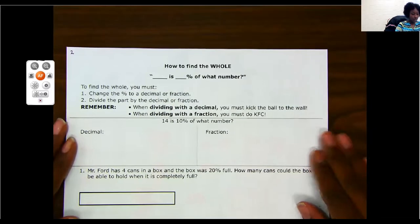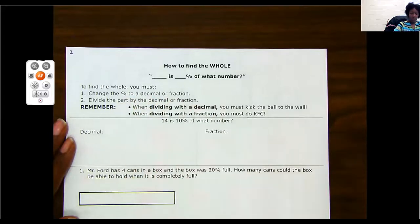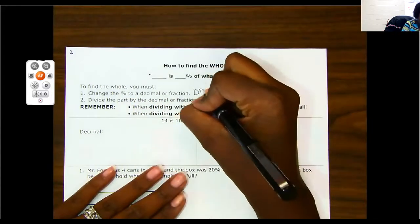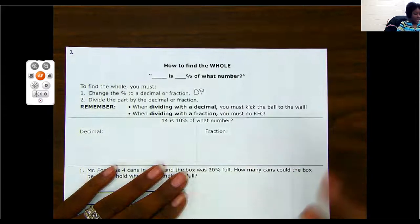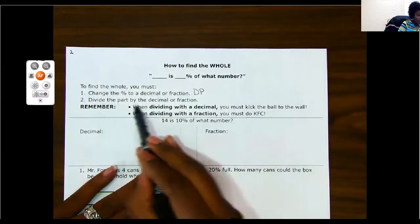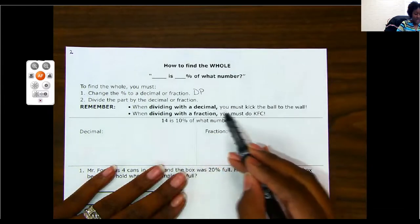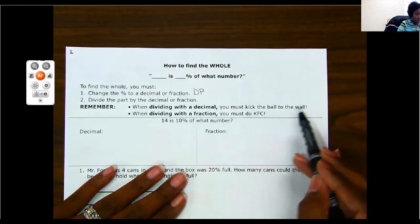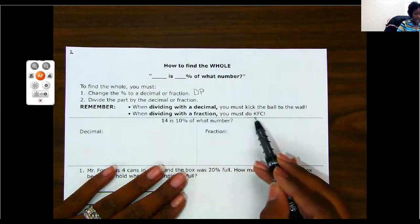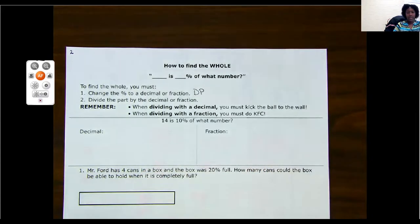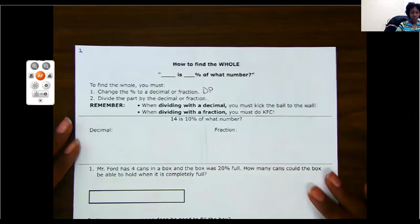To find a whole, you must change your percent to a decimal or fraction. Remember, we do that by using Dr. Pepper. Then you're going to divide the part by the decimal or the fraction. When dividing with the decimal, you must kick the ball to the wall. When dividing with the fraction, you must do KFC. So just like last time, I'm going to show you three different ways to do this.